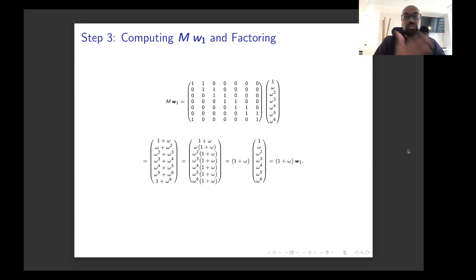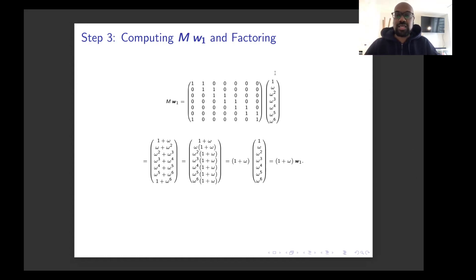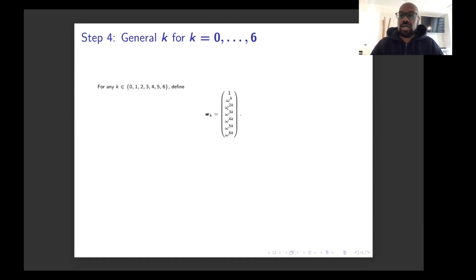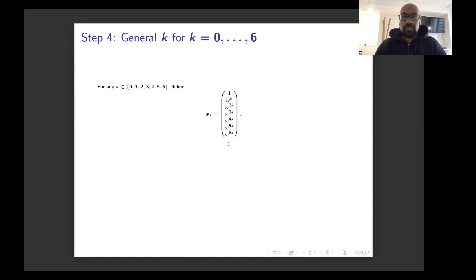So we found two eigenvalues: the number 2, and 1 plus omega. How do we find others? Well, we can play the same game with this vector by raising all entries to different powers. For each k from 0 to 6, we define a vector w_k which contains the k-th powers of the roots of unity: 1, omega to the k, omega to the 2k, and so on up to omega to the 6k. When k is 0 all entries are 1s — the all-1s vector with eigenvalue 2. When k is 1, we get exactly the vector from the previous example.